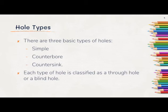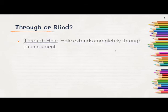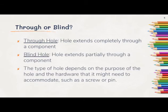Each type of hole is classified as a through hole or a blind hole. So what's the difference between a through or a blind hole? A through hole extends completely through a component while a blind hole extends partially through a component. The type of hole depends on the purpose of the hole and the hardware that it might need to accommodate, such as a screw or a pin.